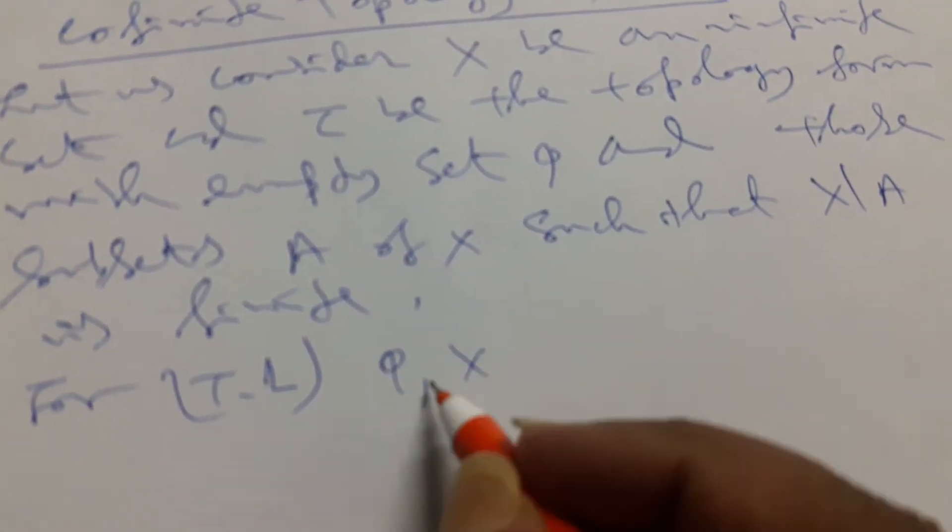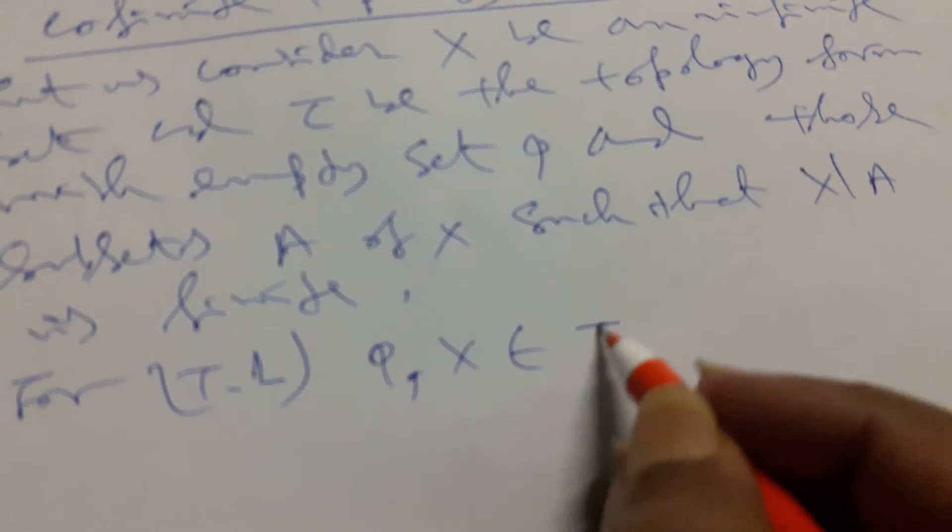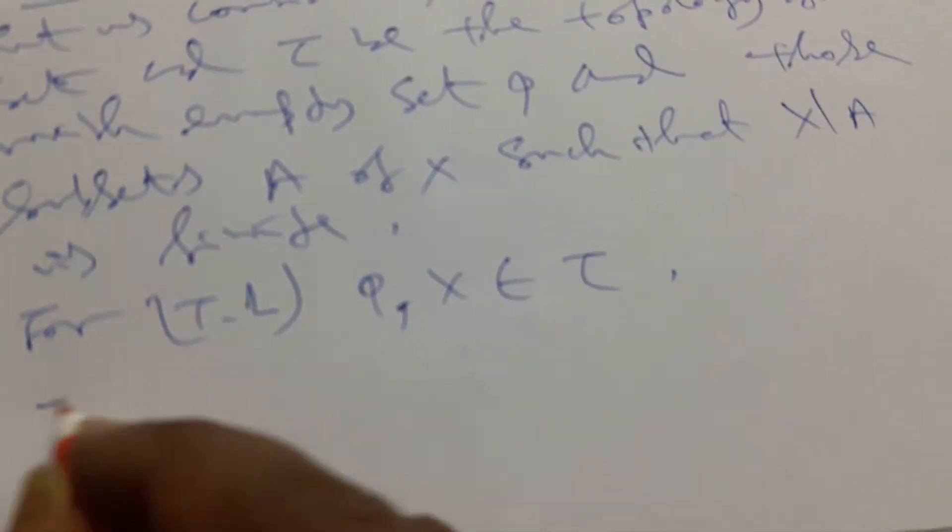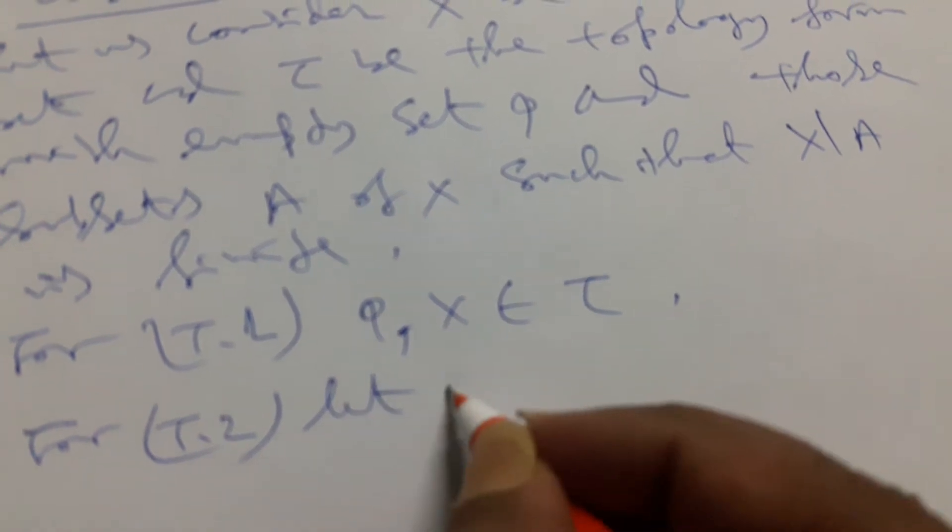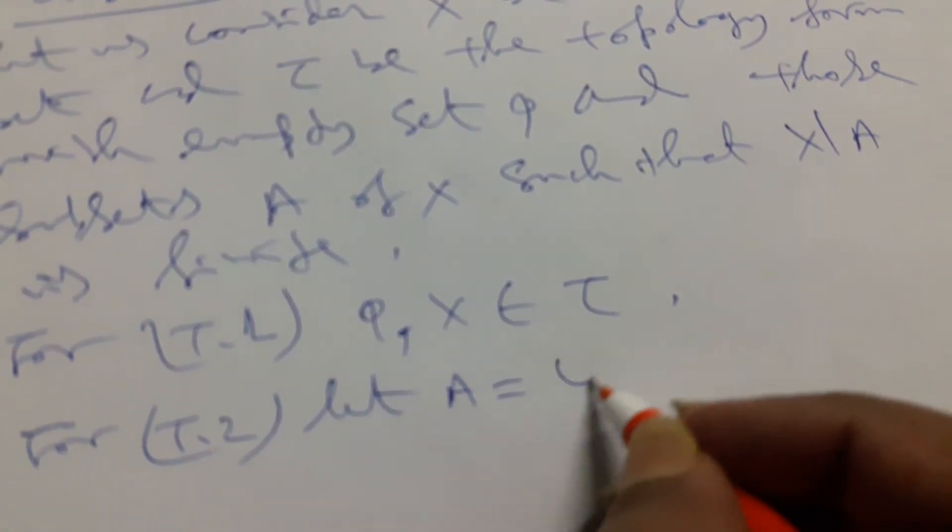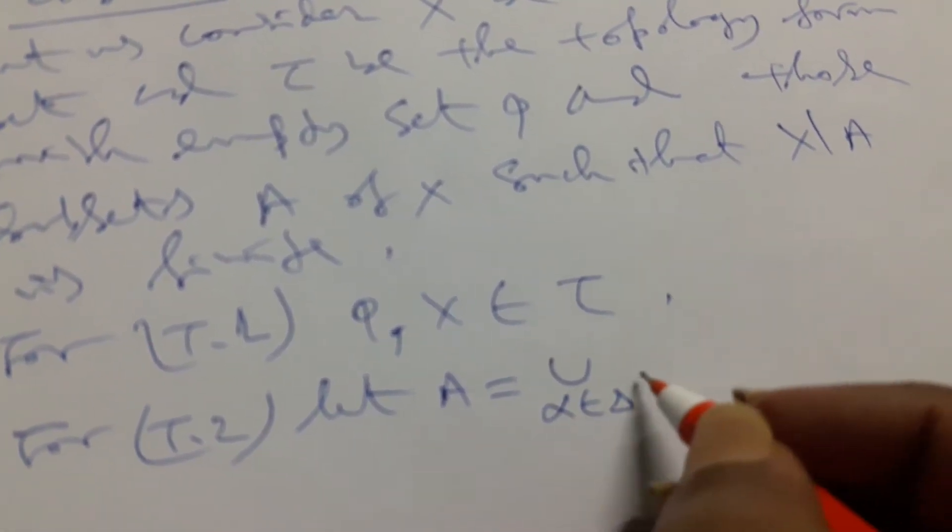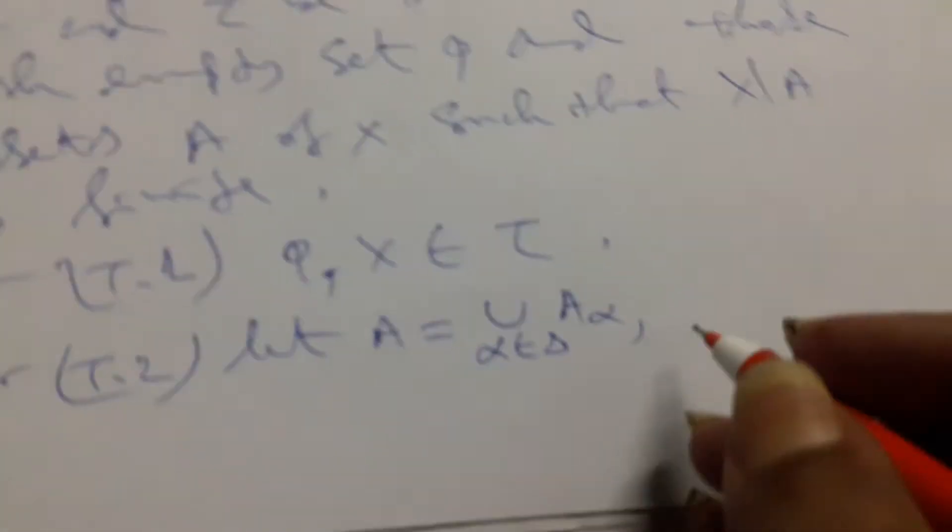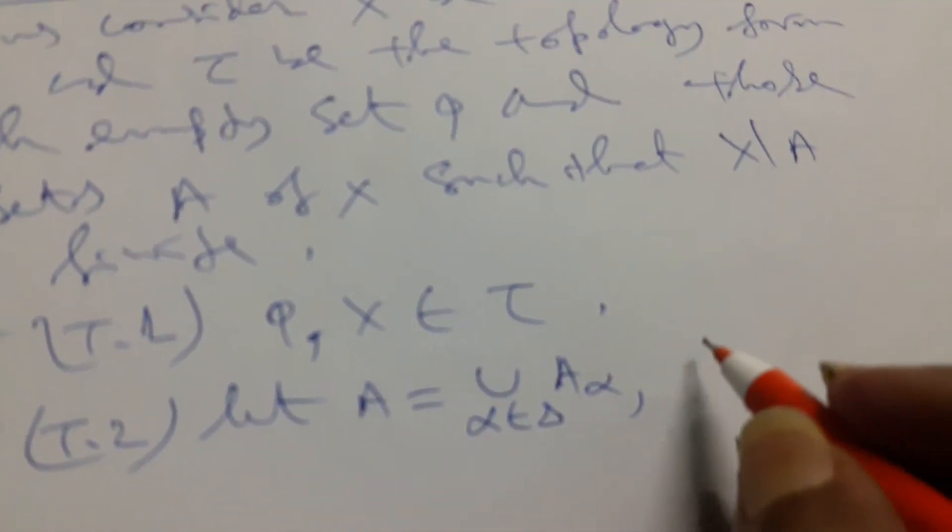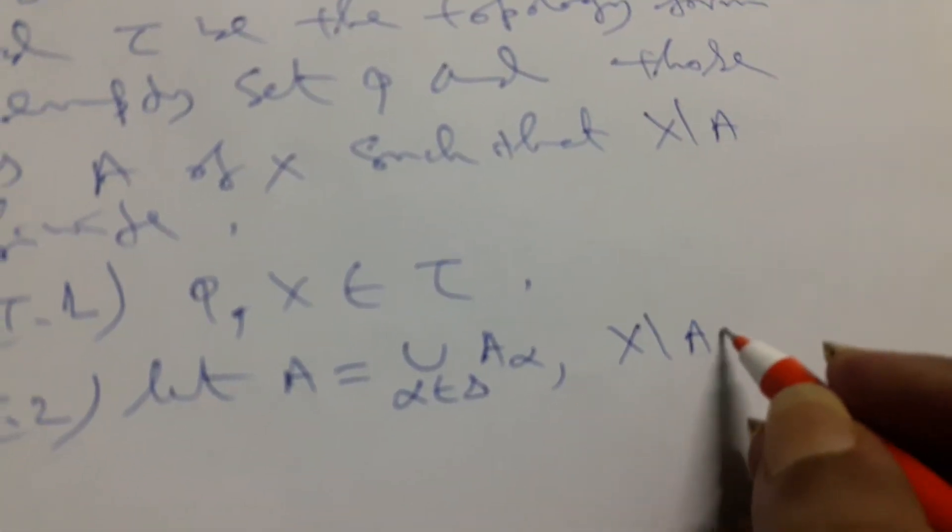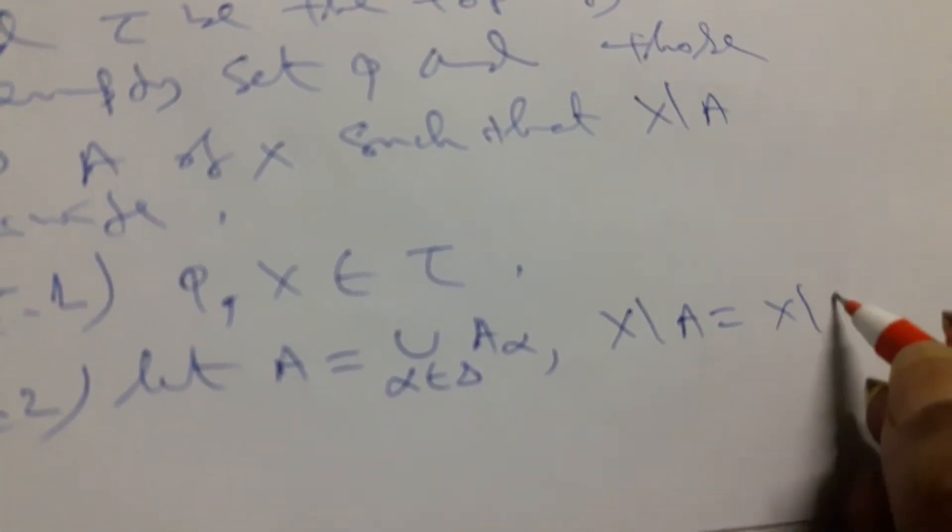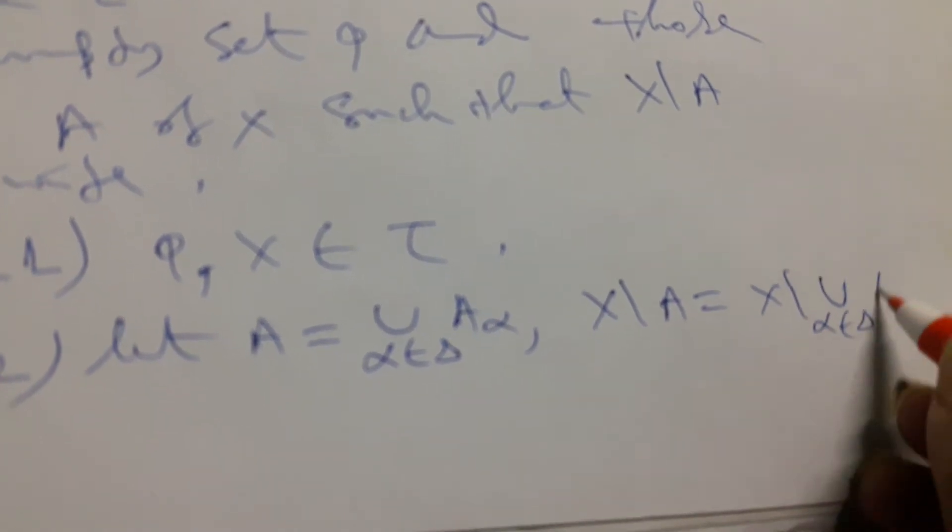For T2, let A equal union of A_α where α belongs to Δ, where α is indexed. Therefore X minus A, that will be X minus union of α belongs to Δ of A_α.